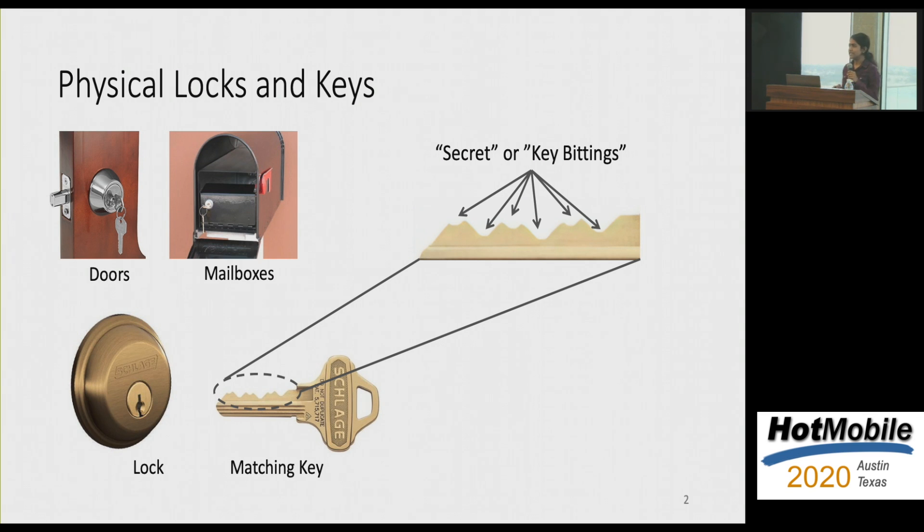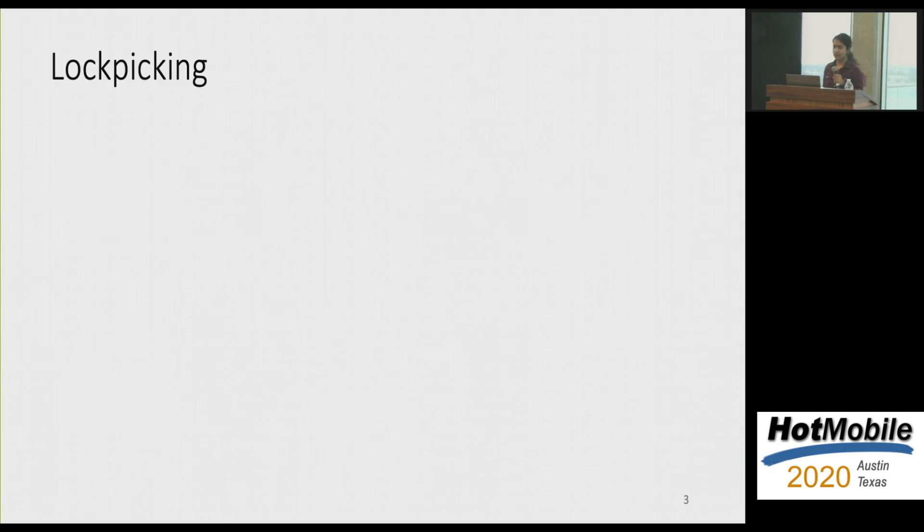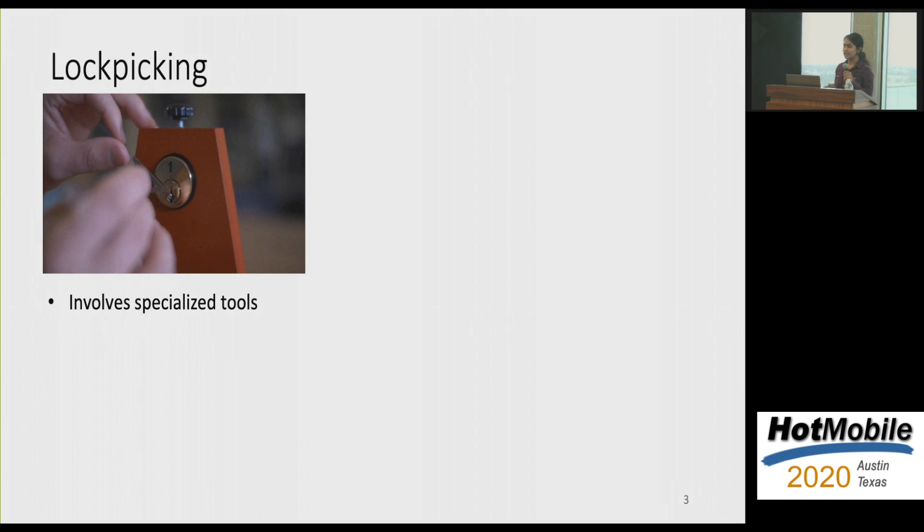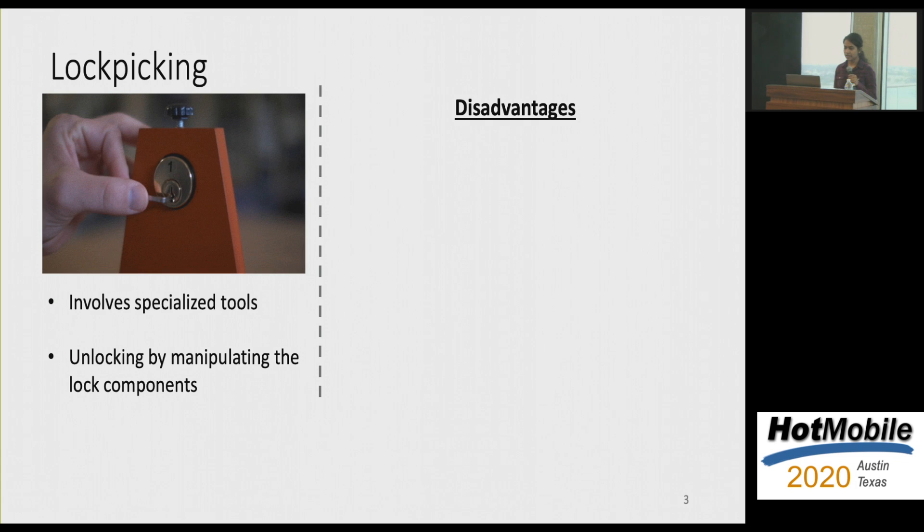But are these physical locks and key systems really secure? One of the most popular ways to compromise the security of these systems is lockpicking, where a set of specialized tools are being inserted into the keyway of the lock, which manipulate the lock's internal components in order to unlock them. But if you think from an attacker's perspective, this has certain disadvantages. Firstly, it involves active manipulation for the attacker, which means the attacker requires tools and expertise. And also, because the attack takes few seconds to a few minutes to completely launch, it quickly raises suspicion.